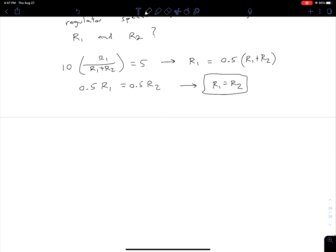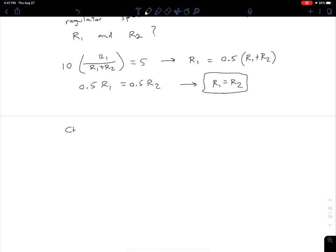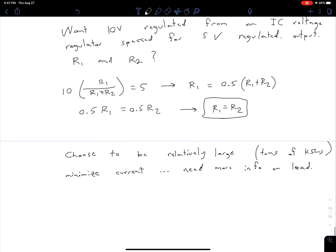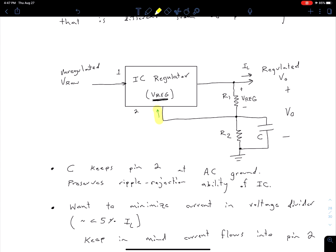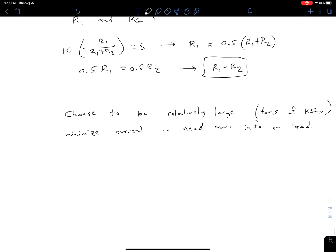In this particular case, we don't know exactly what value to choose, but we would want to choose these to be relatively large—typically at least tens of kilohms if not higher. The reason is to minimize current in our voltage divider network. We would need more info about our load current to keep that at roughly 5% of load current. We would also need to know how much current goes into terminal 2 to fully understand that.